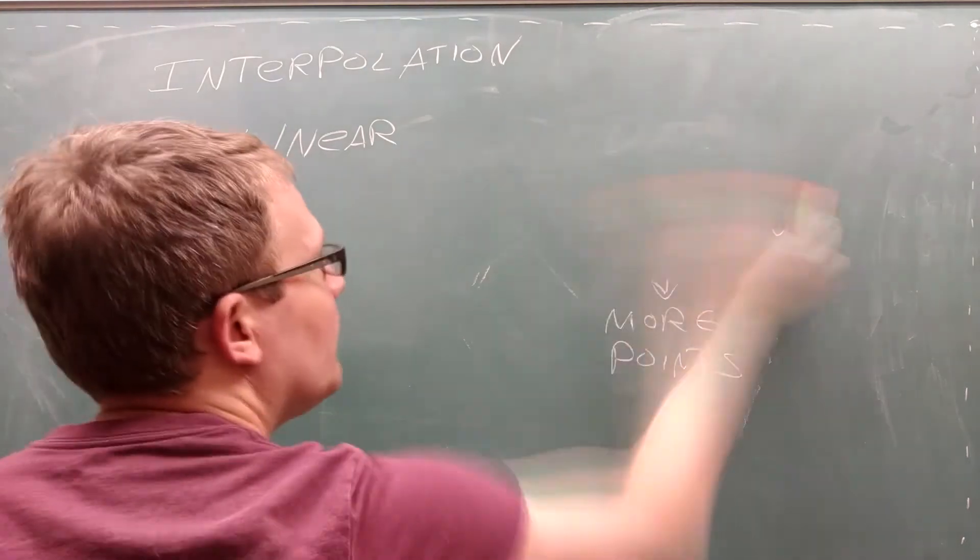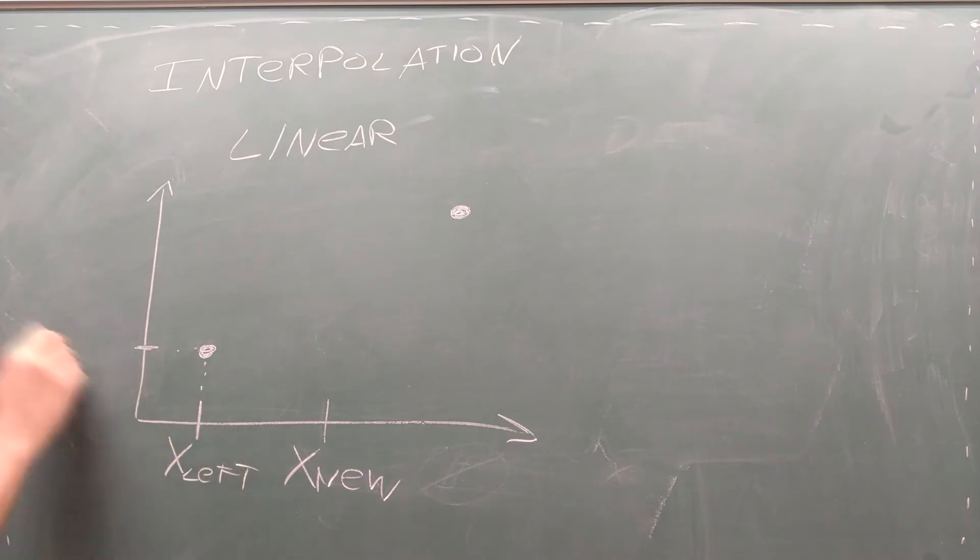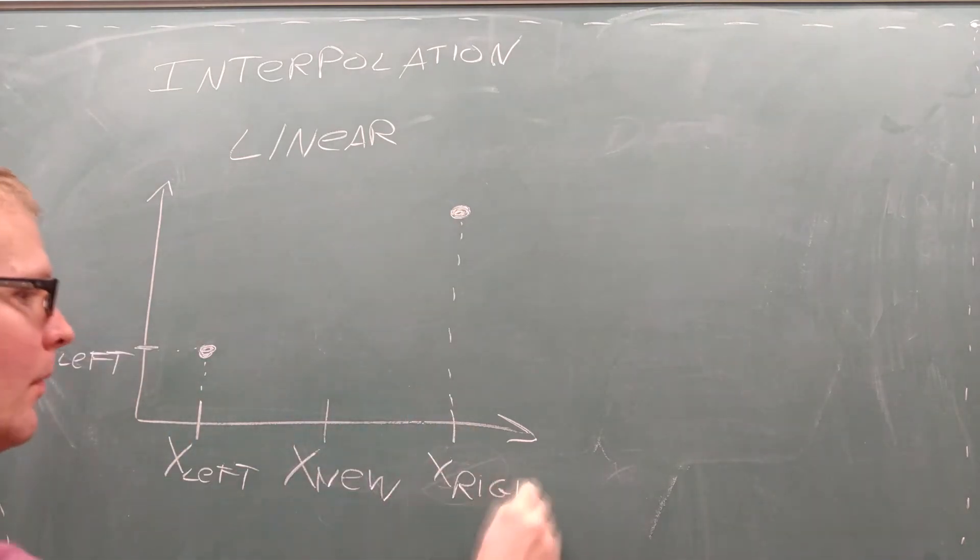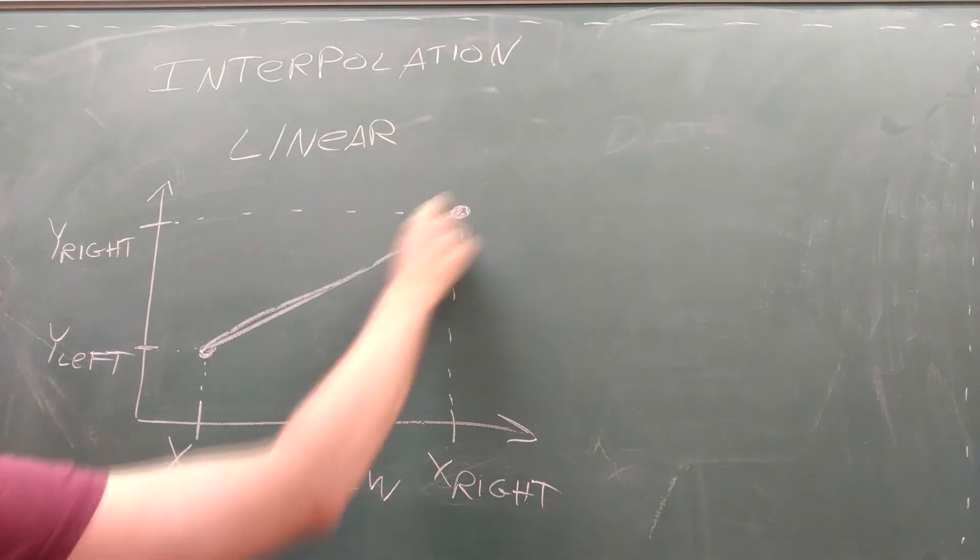Linear interpolation is the simplest form of interpolation. If you want to know the value of the dependent variable at a new value of the independent variable, you look for the two data points closest to your independent variable and set up a line between them.